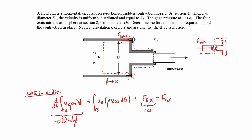Surface forces in the x direction: we have the bolts, which is what we're solving for. We've drawn them acting in the positive x direction. If the result turns out to be negative, the force will actually act in the opposite direction. As drawn, the bolt force is in compression; if the arrow were reversed, the bolts would be in tension.